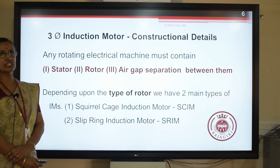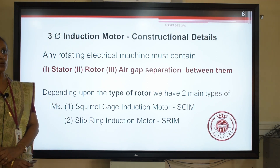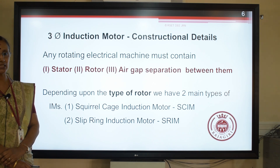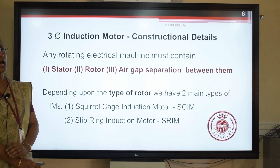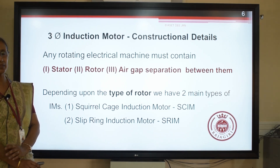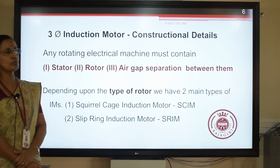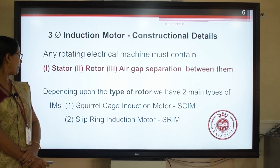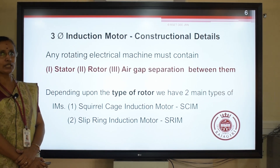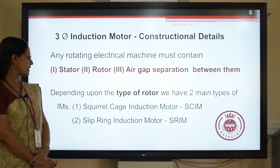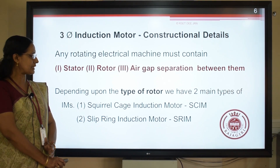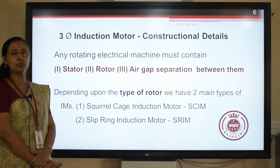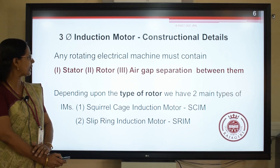Moving on to constructional details. Like any rotating machine, it needs a stator as well as a rotor, and between the stator and the rotor there is an air gap separation. The air gap has to be kept as minimal as possible — 1 mm to 3 mm. Depending upon the type of rotor, we have two types: one is a squirrel cage induction motor, commonly known as SCIM, and second is a slip ring induction motor, commonly known as SRIM.